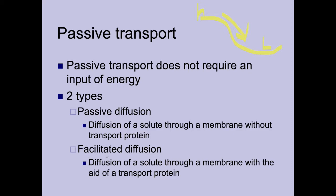In facilitated diffusion, we have diffusion of the solute through the membrane, but it has to do so through a protein. This would be for a larger molecule like water or glucose. There's going to be some type of protein that allows movement of that molecule across the membrane, but it has to move through the protein. It moves from high concentration to low concentration — it just has to do so through some type of protein.